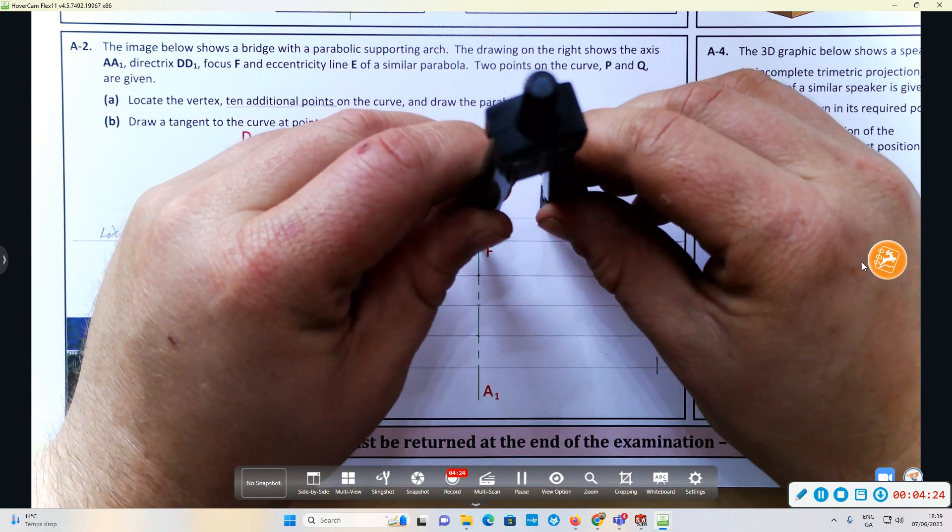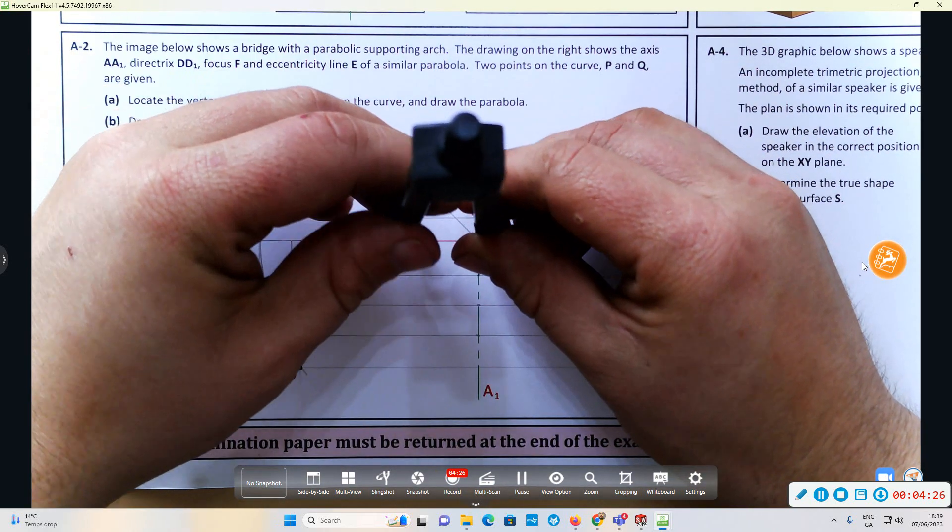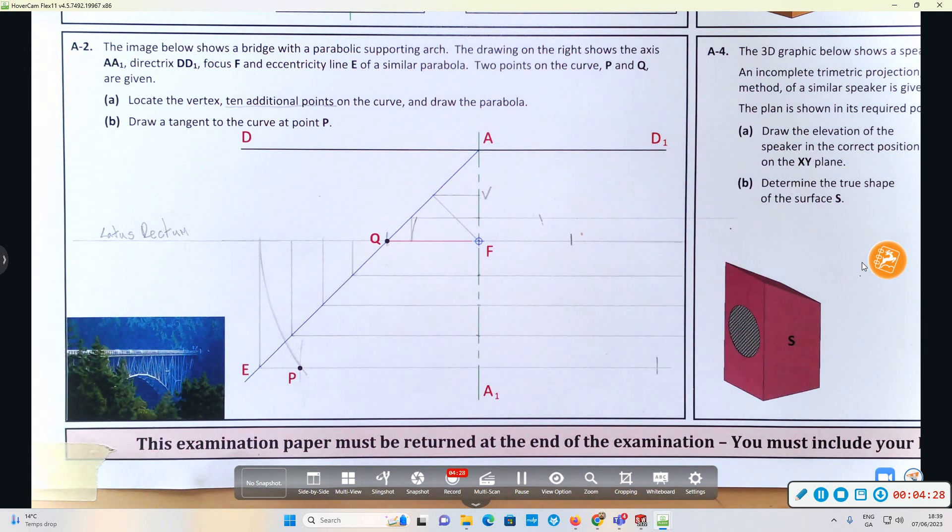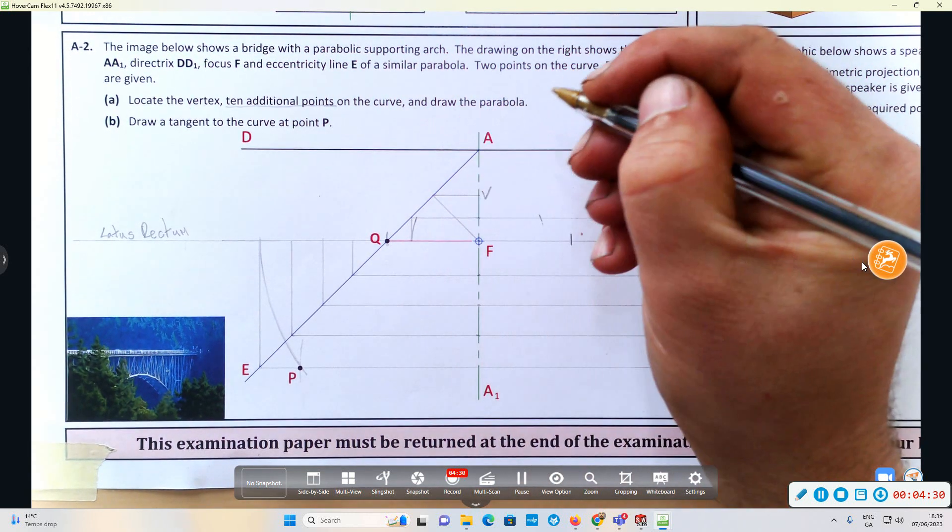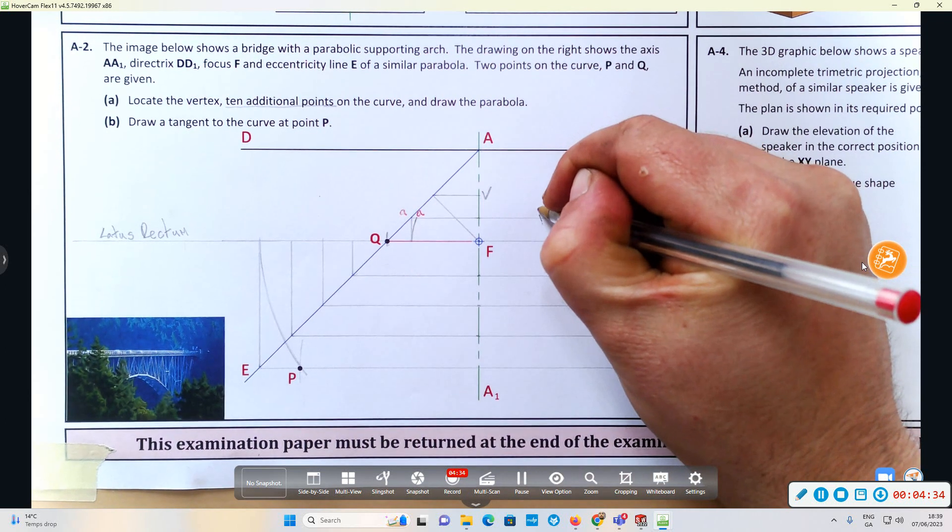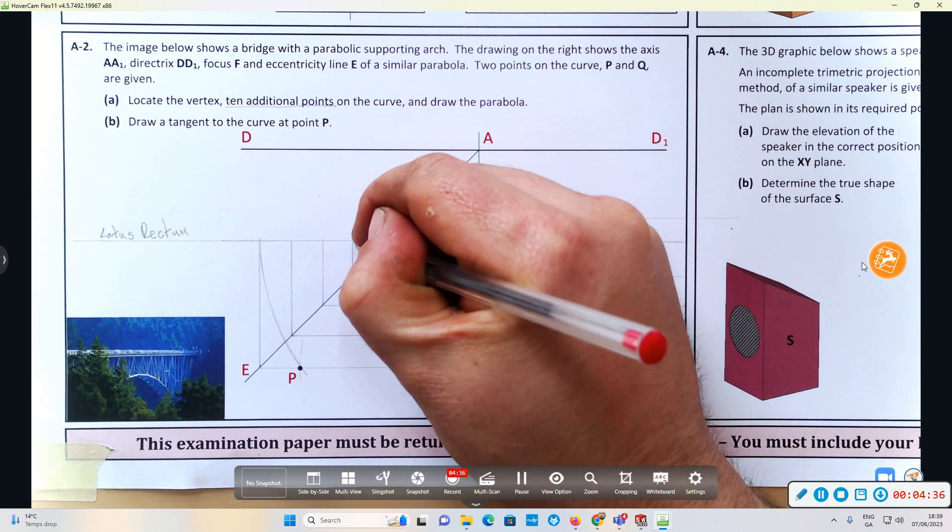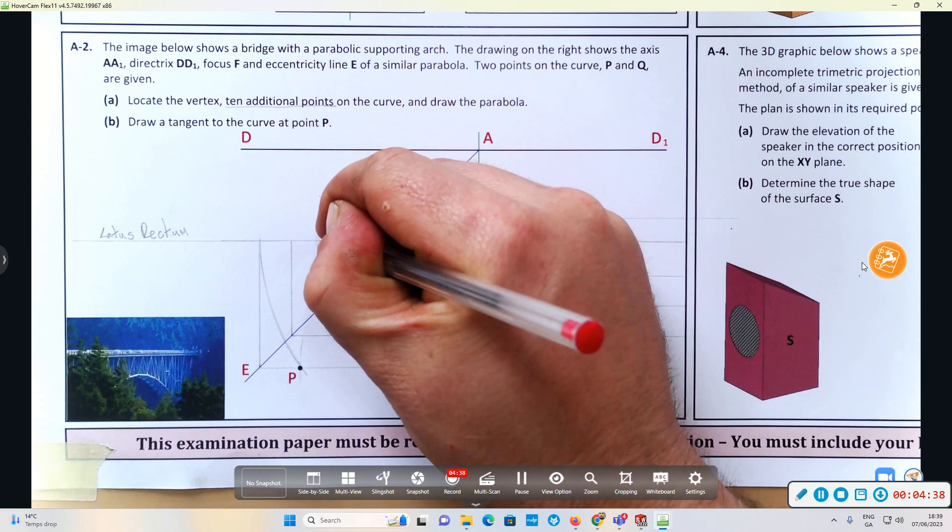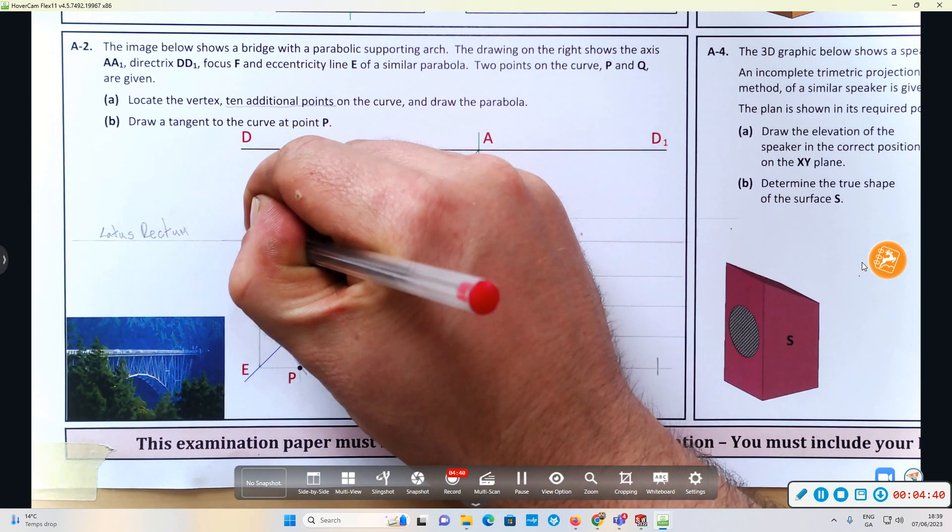I'm going to go to the next one and actually label these to make it better: B, C, D, E.